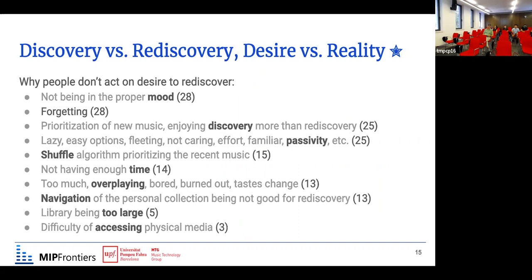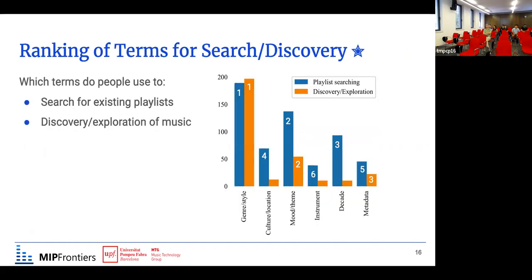A lot of people enjoy discovery more than rediscovery if they have a choice. Many options we condensed relate to passivity — exploitation is much more passive in this regard. Another question we asked was which terms people use when searching for something specific versus when they want to explore. Genre or style came first, followed by mood and theme, and then rating, instrument, decade, and metadata — with some differences between the two contexts.